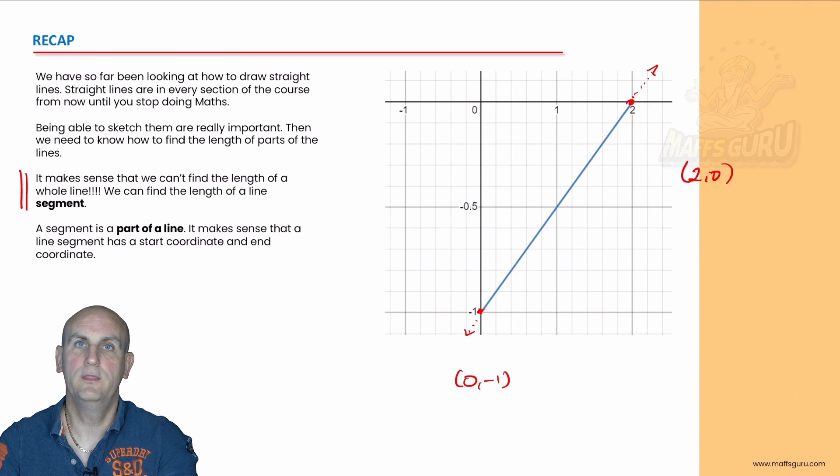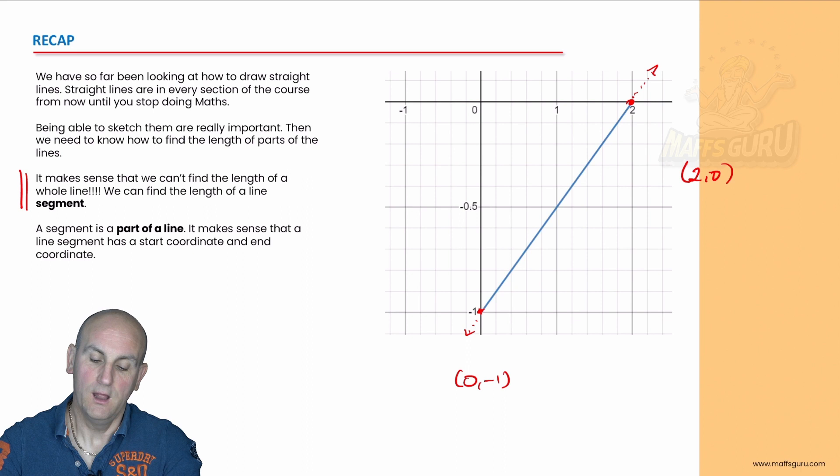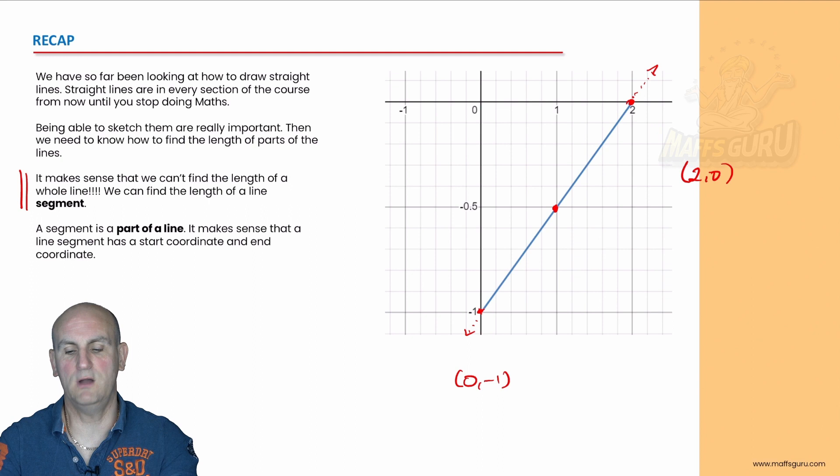How do we find it? You can probably see that the middle of that line would have to be right there — it just has to be. But how would I find the coordinate of that? You might say just read it off the graph, and yes I know — but what if I just gave you the two coordinates without a graph?